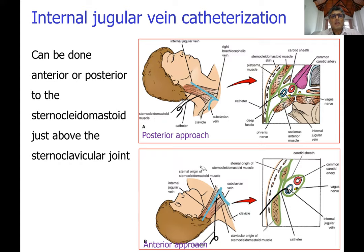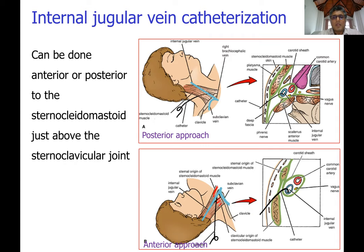The internal jugular vein can also be catheterized for cardiac procedures by sending a catheter through it. It can be accessed either through the gap between the two heads of the sternocleidomastoid at the lower level, or by going behind the sternocleidomastoid at a higher level, since within the carotid sheath the artery is medial and the vein is lateral.